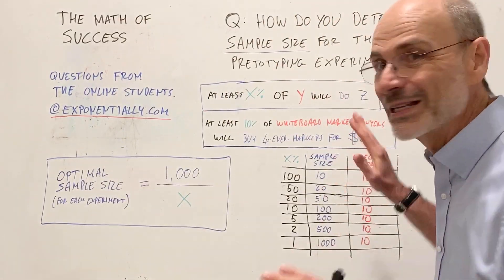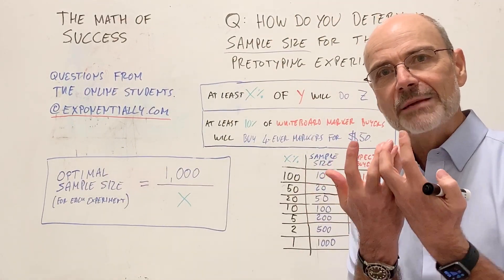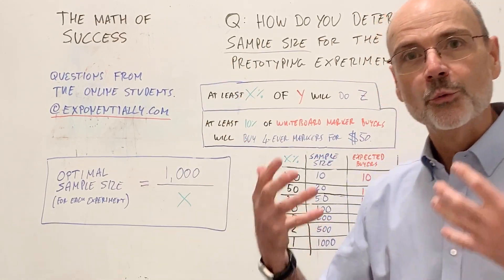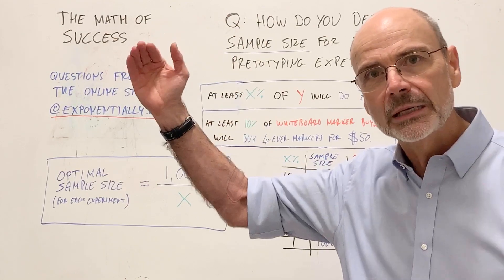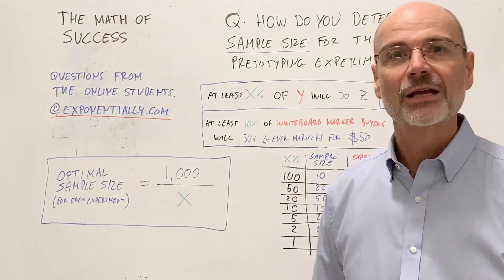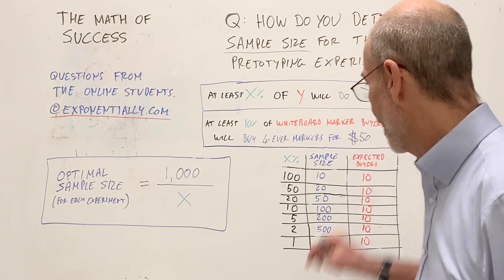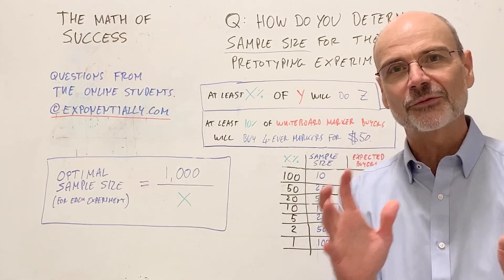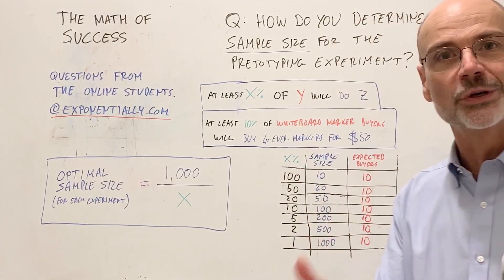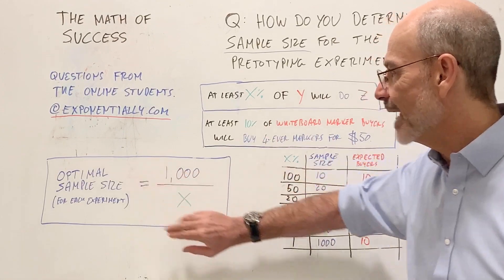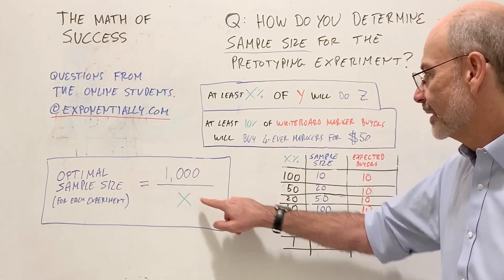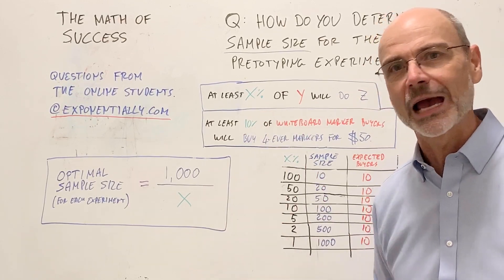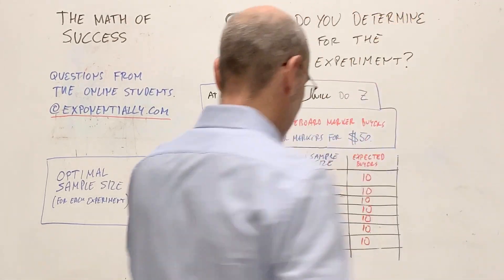So I hope this helps you. Once again, do you see in my system, in my methodology, everything that you do ties into the next step? We say it with numbers from beginning to end. Data beats opinion. So I hope this is useful. Remember, the simplest formula, I'm all about simplifying the formulas with heuristics that actually work, heuristics or rules of thumbs. Optimal sample size, take 1,000, divide by x in your X percent XYZ hypothesis, and you get your optimal sample size.